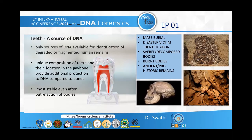Why are teeth a good source of DNA? Teeth and bones are frequently the only sources of DNA available for identification of degraded or fragmented human remains, as in cases such as mass burials, disaster victim identifications after natural and man-made disasters like plane crashes, severely decomposed bodies, burnt bodies, and ancient and prehistoric remains. The unique composition of teeth and their location in the jawbone provide additional protection to DNA compared to bones, making them a more preferred source, and they are more stable even after putrefaction of the bodies.